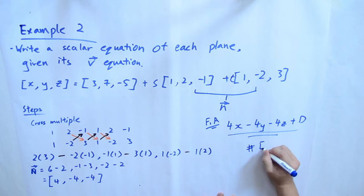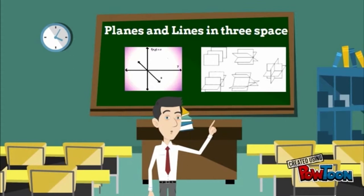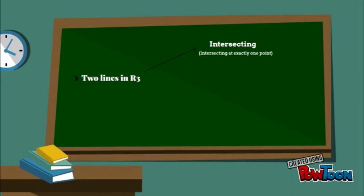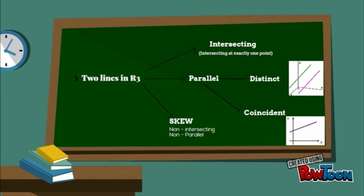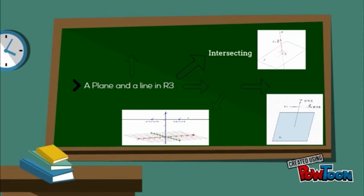Planes and lines in three-space: two lines in R3 can be intersecting — meeting at exactly one point — or parallel, which has two types: parallel and distinct, or parallel and coincident. Two lines can also be skew, meaning they are not intersecting and not parallel. For planes and lines in R3, we have intersecting lines at one point, parallel and distinct, and parallel and coincident. Skew lines exist in R3, but the difference between the dimension of the space and the object must be at least two.